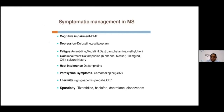Symptomatic management is also important alongside disease-modifying treatment. Troublesome symptoms include cognitive problems, depression, fatigue, gait problems, heat intolerance, Lhermitte's sign, and spasticity. Fatigue is difficult to treat — amantadine is sometimes used. For oscillopsia, gabapentin or memantine may be helpful. Spasticity is managed with baclofen, tizanidine, or dantrolene.